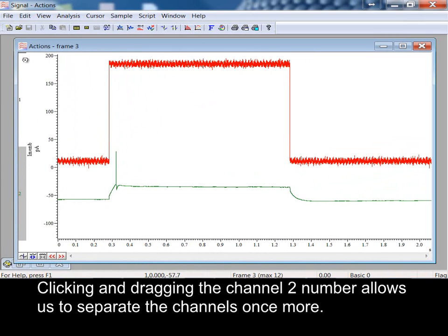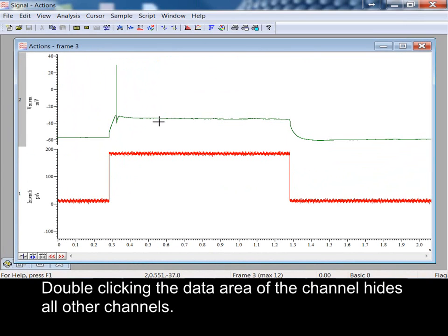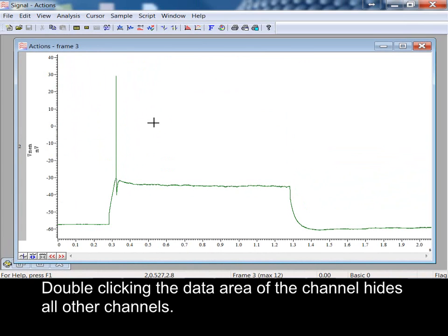Clicking and dragging the channel 2 number allows us to separate the channels once more. Double-clicking the data area of the channel hides all other channels.